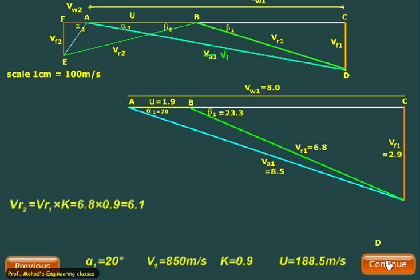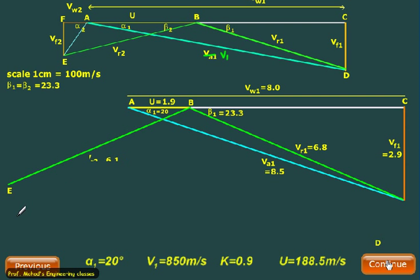So using beta_2 and Vr_2 equal to 6.1, we can construct here one angle beta_2 at B, so this one point B represents Vr_2 equal to 6.1. And now I will complete this triangle, that is a right angle triangle.